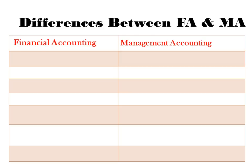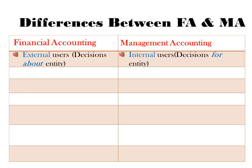Financial accounting focuses on external users — persons making decisions about the entity, such as whether they invest in the entity or, from a lender's perspective, whether the business is viable enough for them to lend to. Management accounting, on the other hand, is accounting for internal users, and these internal users make decisions for the entity.